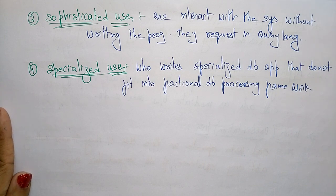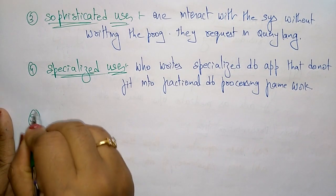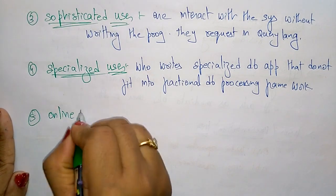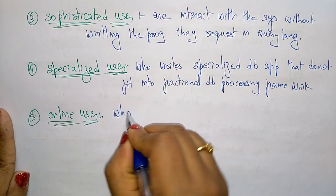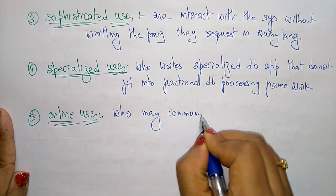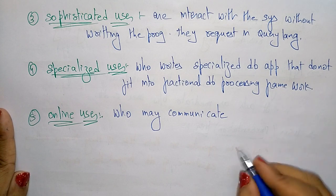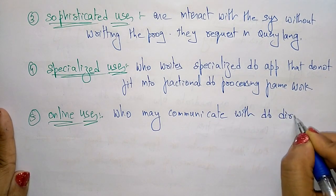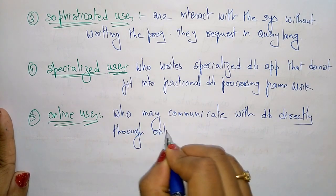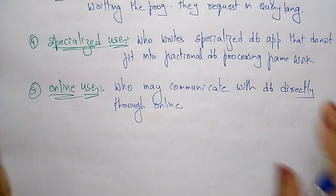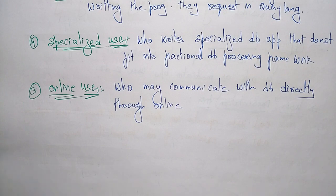The last database user type is the online user. Online users are those who communicate with the database directly through online. These are the different users present in the database — they are accessing the database. Those are: native users, application programmers, sophisticated users, specialized users, and online users.